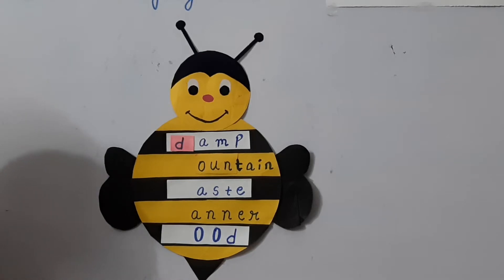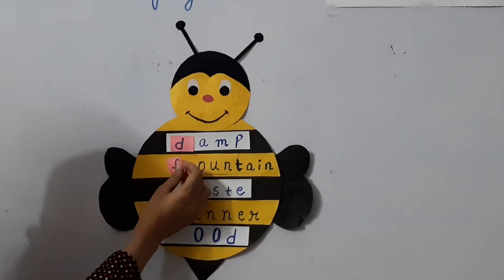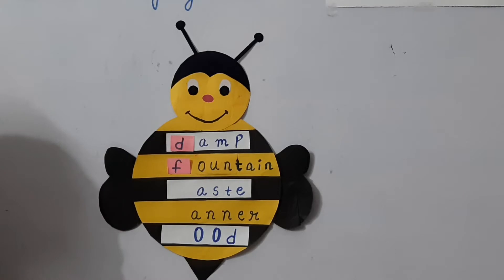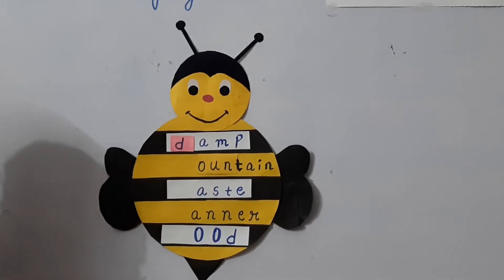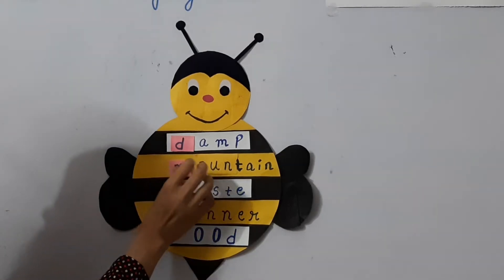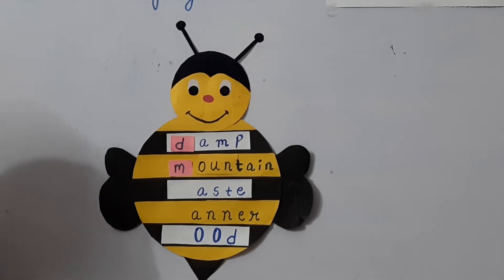The next one — O-U-N-T-A-I-N. Now if I add F to this, what will it become? F-O-U-N-T-A-I-N, fountain. And if I add M to this, what will it become? M-O-U-N-T-A-I-N, mountain. Fountain and mountain.